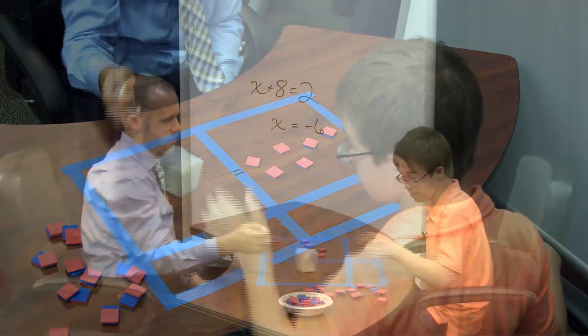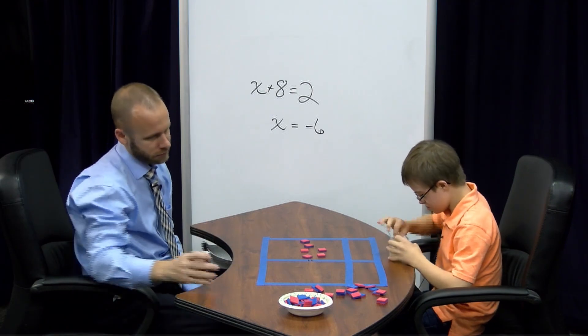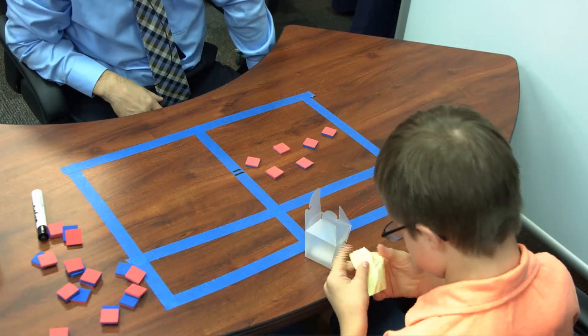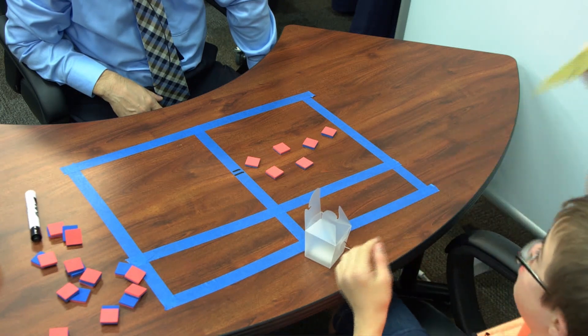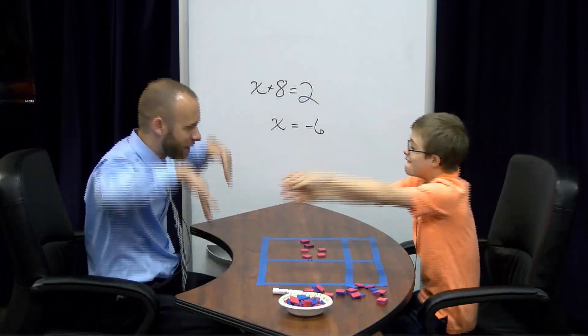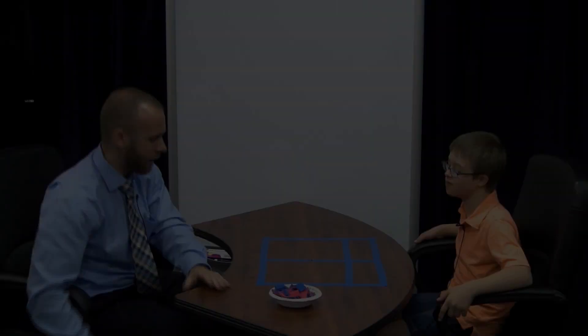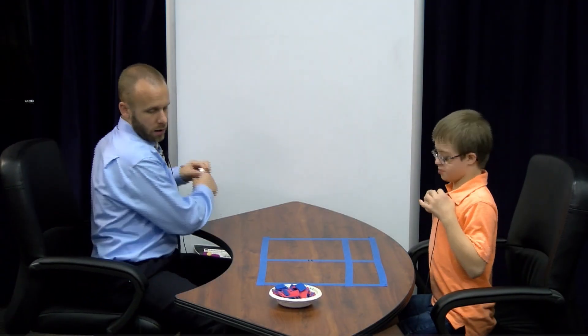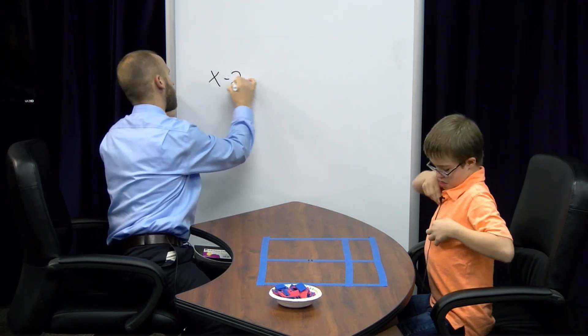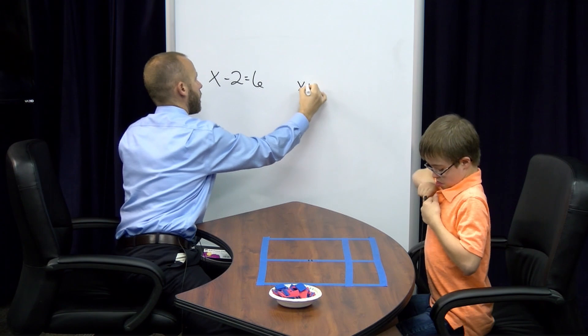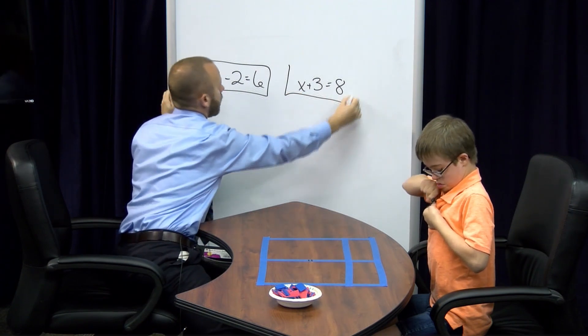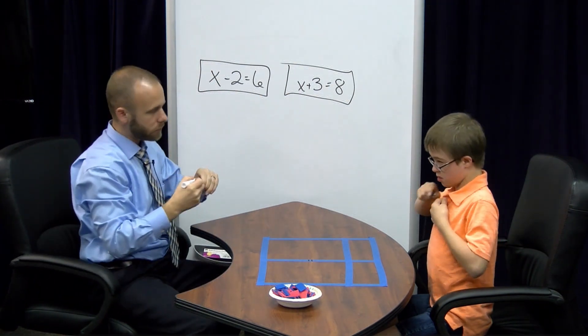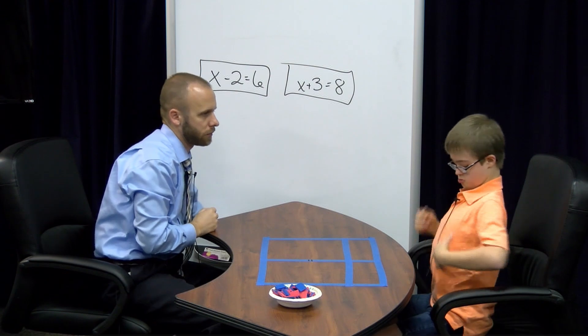So X is supposed to equal negative six. Check it out. What's in there? Negative six. You got it, buddy. You ready? Double dolphins. High five. Here we go.